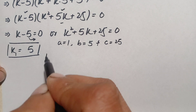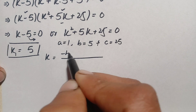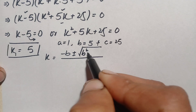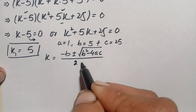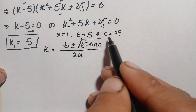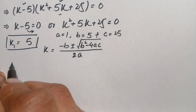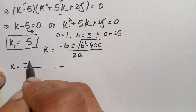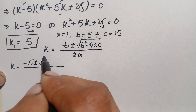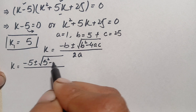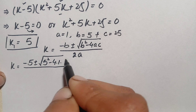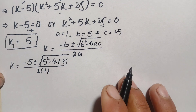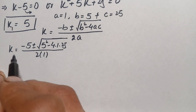The quadratic formula is k = (−b ± √(b²−4ac)) / 2a. Now substituting these values: k = −5 ± √(5² − 4 × 1 × 25) divided by 2 times 1. Let us simplify the right hand side.